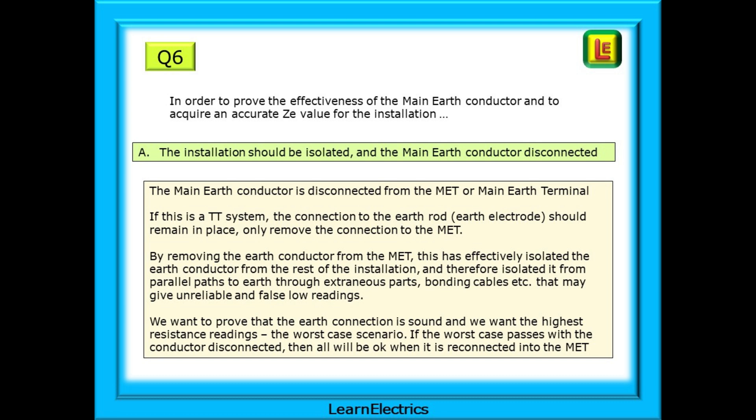By removing the earth conductor from the MET, this has effectively isolated the earth conductor from the rest of the installation and therefore isolated it from parallel paths to earth through extraneous parts, bonding cables, etc. that may give unreliable and false low readings. We want to prove that the earth conductor is actually connected to something and we want the highest resistance readings, the worst case scenario. If the worst case passes with the conductor disconnected, then all will be okay when it is reconnected into the MET.